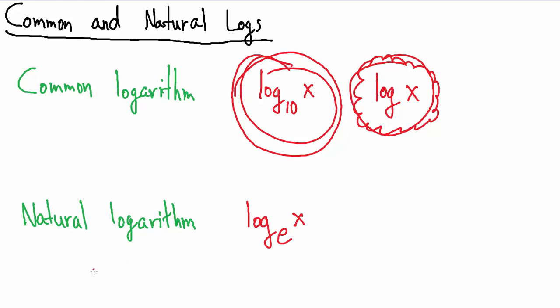So e is the special number. e is approximately equal to 2.718281828.